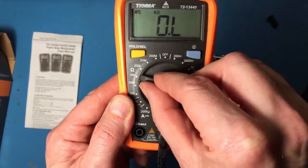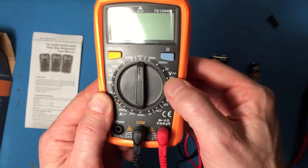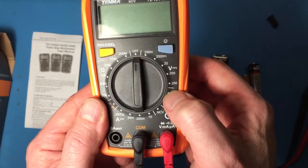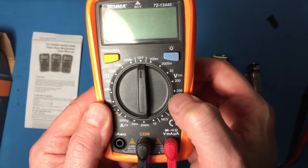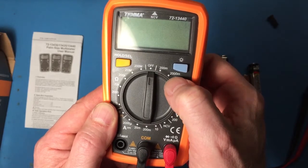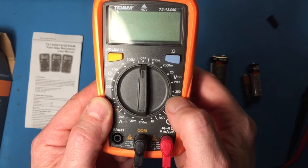So the other measurement we're going to be making a lot of is going to be a voltage measurement. Over here we have volts, and the solid line with the dash under it means DC voltage. So these are our DC voltage ranges right here. The smallest one is 200 millivolts, 2,000 millivolts which is 2 volts, and so on and so forth up to 250 volts.